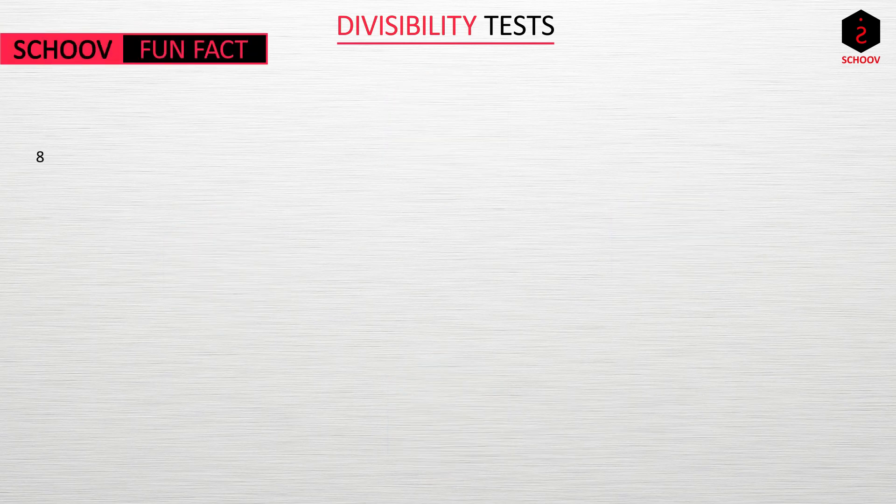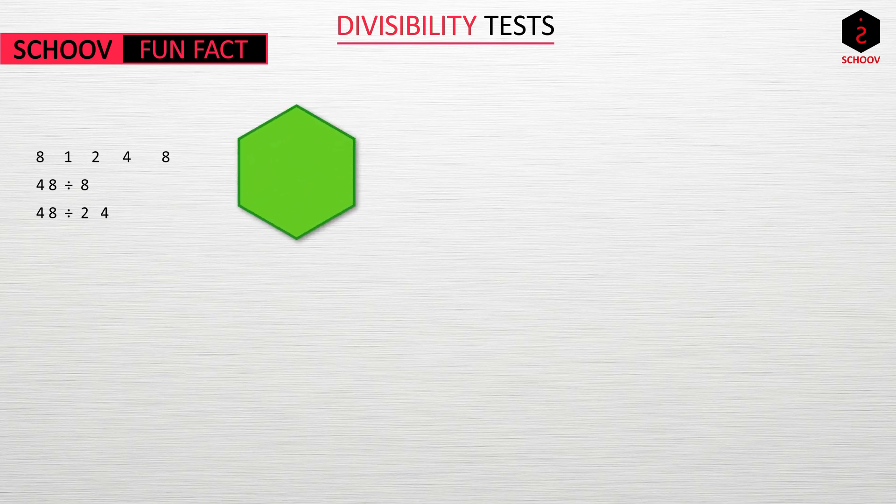Let's start. Take factors of 8: 1, 2, 4, 8. Now 48 is divided by 8 and it is divided by 2 and 4 as well. So the fact is that if a number is divided by a number, it must be divided by its factors too.